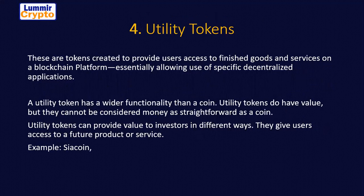The fourth classification is utility tokens. These are tokens created to provide users access to finished goods and services on a blockchain platform, especially allowing use of specific centralized applications. Utility tokens are crypto assets whose purpose is to be used in a particular organization or institution. A utility token has a wider opportunity than a coin. They do have value, but they cannot be considered money as straightforwardly as a coin.